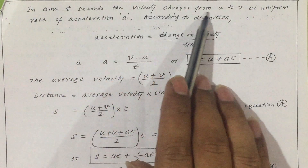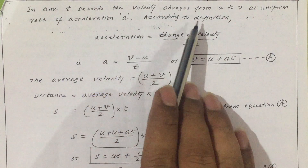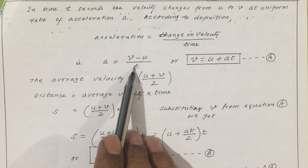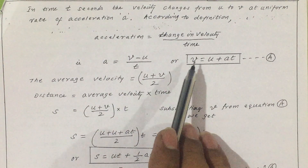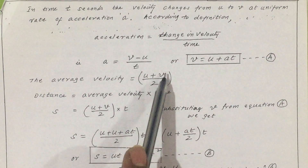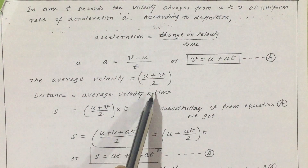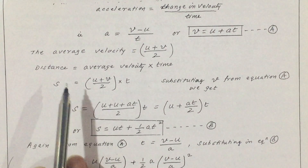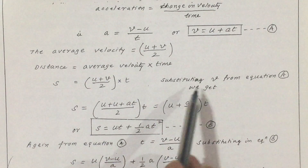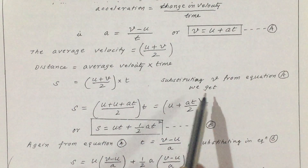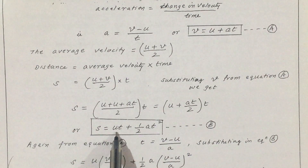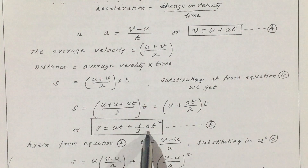In time T seconds, velocity changes from U to V at uniform acceleration A. According to the definition, acceleration = change in velocity / time = (V − U) / T. Cross-multiplying gives equation 1: V = U + AT. The average velocity = (U + V) / 2, and distance S = average velocity × time. Therefore, S = [(U + V) / 2] × T. Substituting V from equation 1 gives equation 2: S = UT + ½AT².